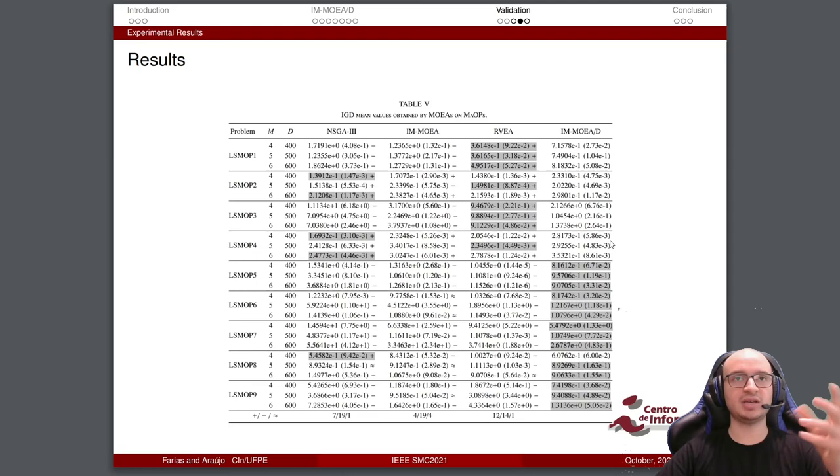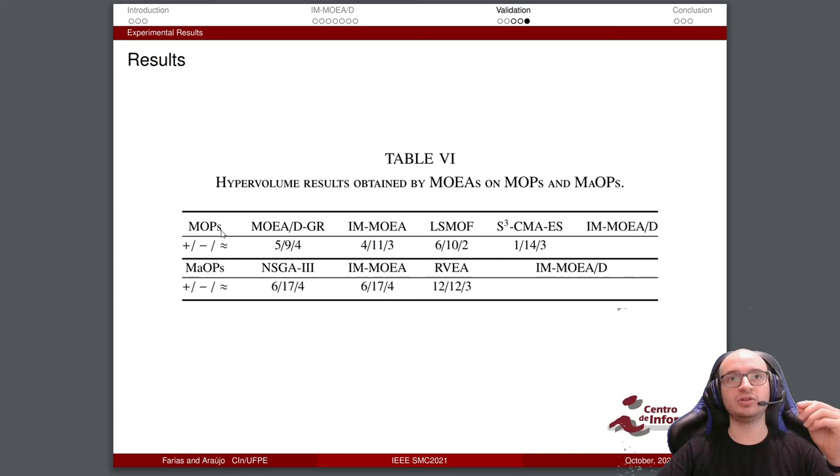To take another perspective, we take a second metric, that is the hypervolume results. For MOPs, we note that we have more victories too: 9-5, 11-4, 10-6, 14-1. For many objectives, we have 17-6, 17-6, and 12-12. Just in the RVEA case, we have a draw. But in that case, we have better results in convex and disconnected, and RVEA is better in linear.